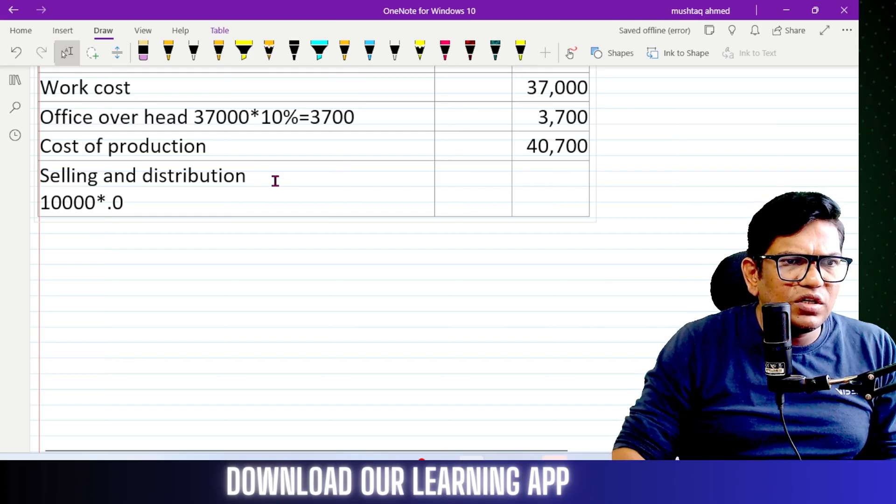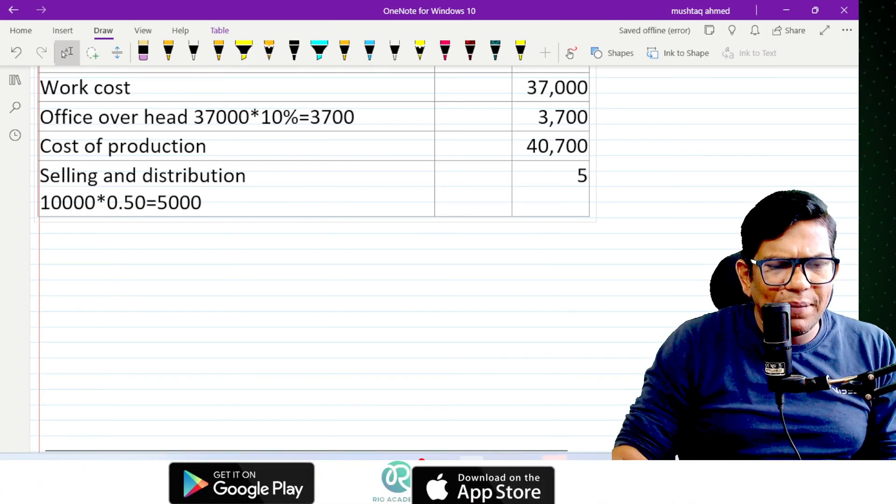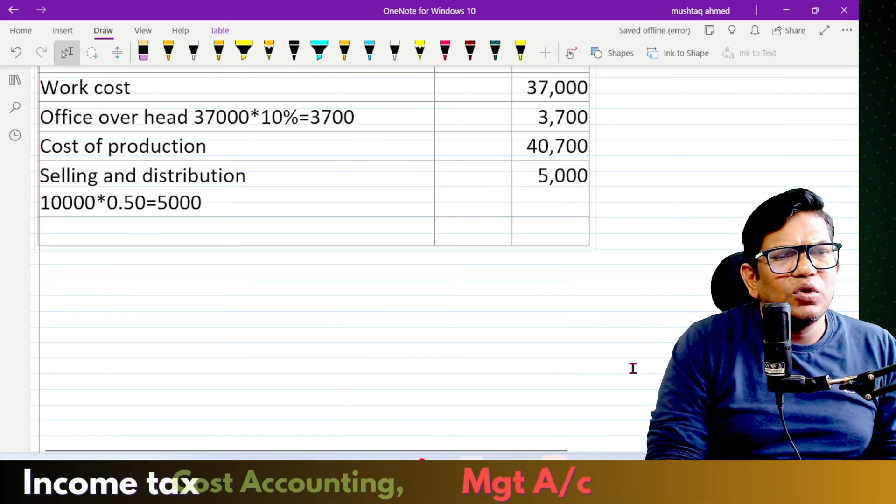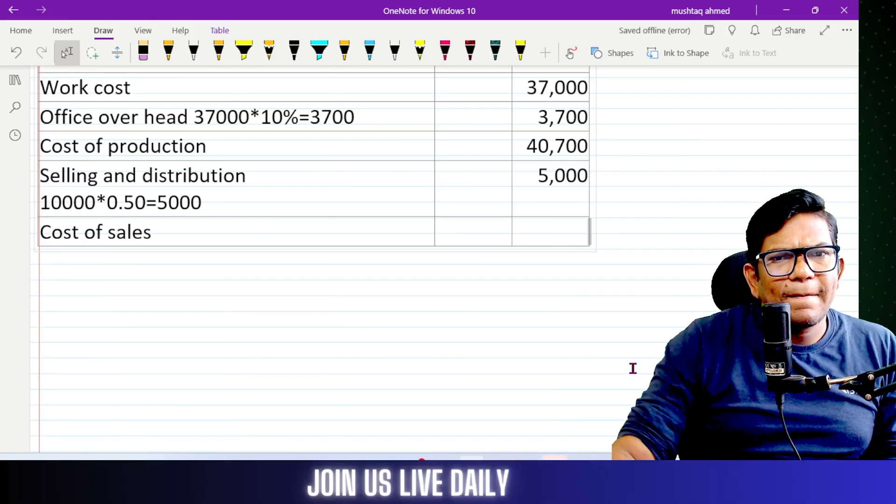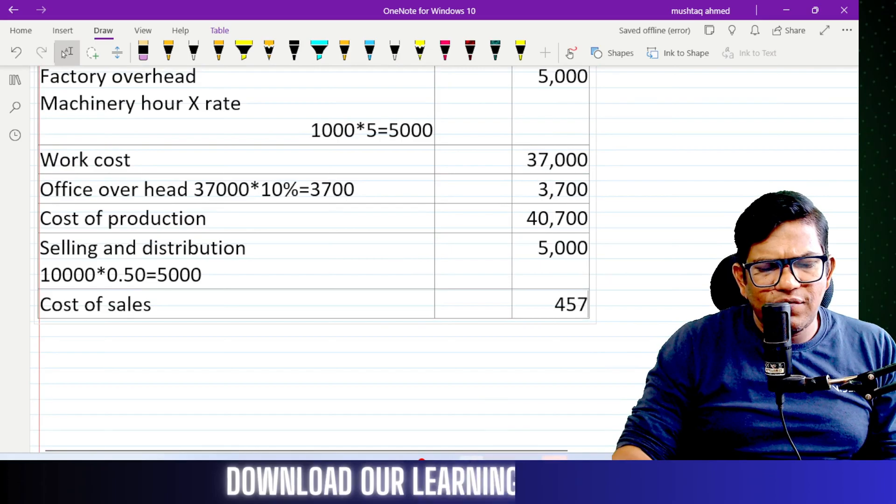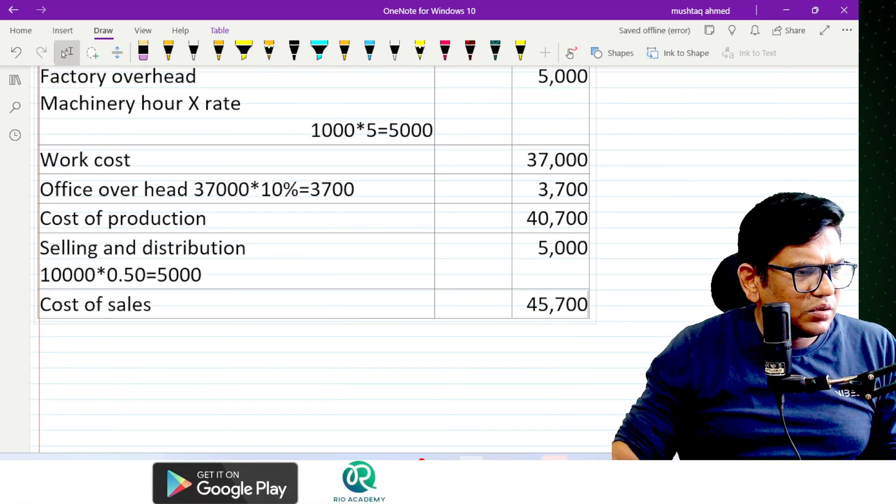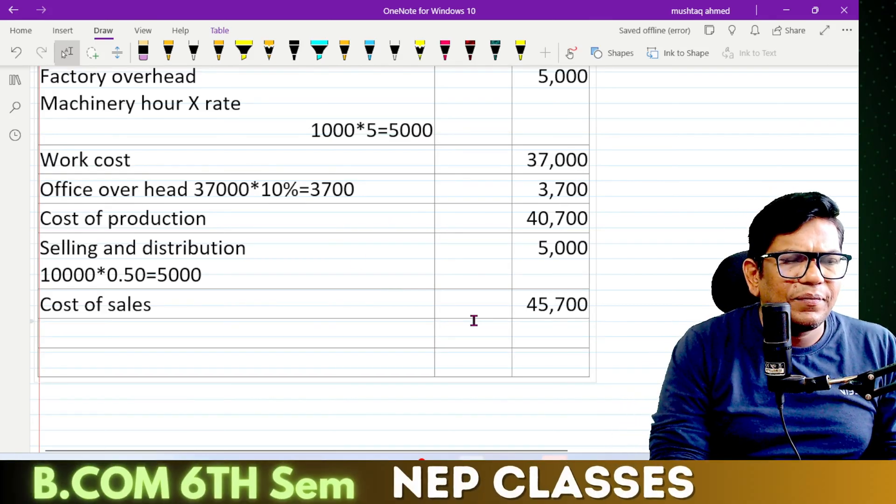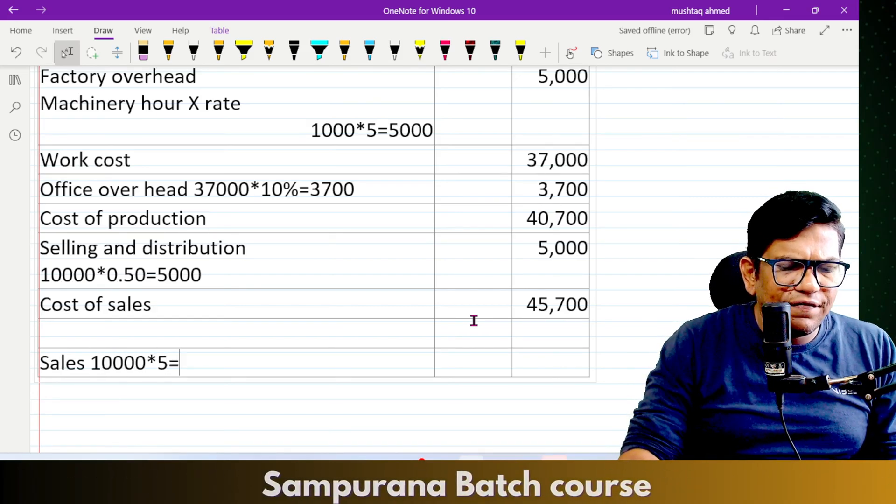10,000 into 0.5 equals 5,000. Cost of sales is 45,700. Next we have sales of 10,000 units at the rate of Rs. 5 per unit